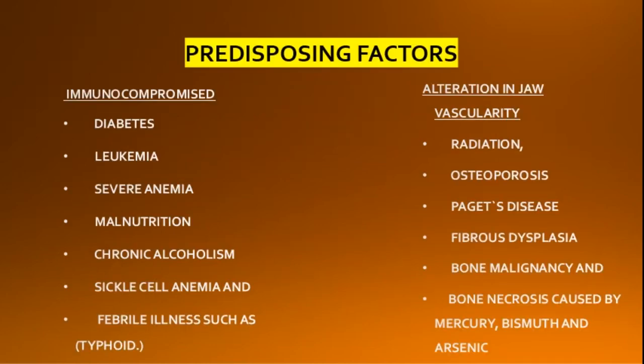The factors that predispose to osteomyelitis are conditions affecting host resistance and conditions that alter jaw vascularity. Immunocompromised patients include those with diabetes mellitus, leukemia, severe anemia, malnutrition, chronic alcoholism, sickle cell anemia, and certain febrile conditions. The conditions which alter jaw vascularity include radiation, osteoporosis, Paget's disease, fibrous dysplasia, bone malignancy, and bone necrosis. These are the predisposing factors to jaw osteomyelitis.